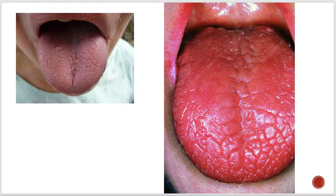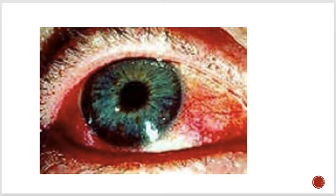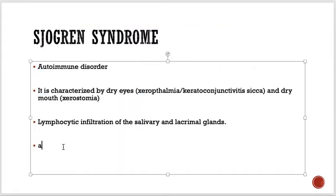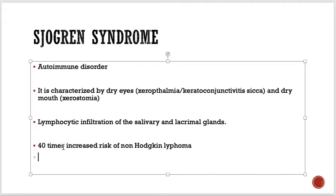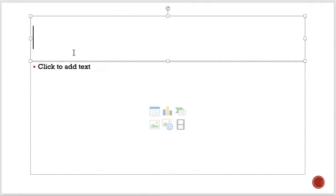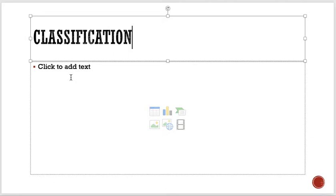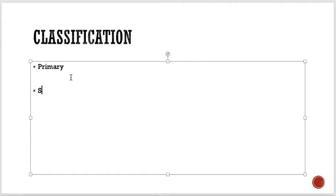The type of lymphoma is non-Hodgkin lymphoma. Regarding classification, it could be primary with no other cause, or secondary to other rheumatological or autoimmune conditions like SLE, rheumatoid arthritis, dermatomyositis, or even HIV.